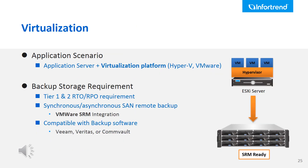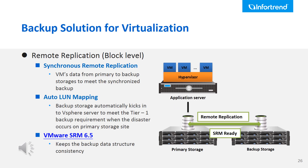The next application is virtualization. The general topology has an administrator creating several virtual machines on a server connected to storage. We recommend two solutions: synchronous remote replication plus auto-LUN mapping and backup software solution, or combining InfoTrain's synchronous remote replication with the virtualization platform's accessibility recovery feature, like VMware SRM (Site Recovery Manager). The topology of virtualization with backup software is very similar to the database one. For detailed information about InfoTrain storage integrated with VMware SRM, please refer to the hyperlink of the application note about VMware best practice.